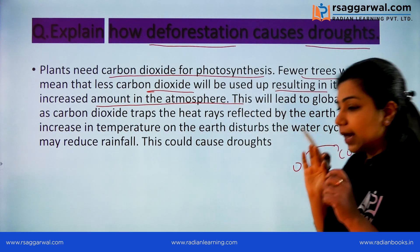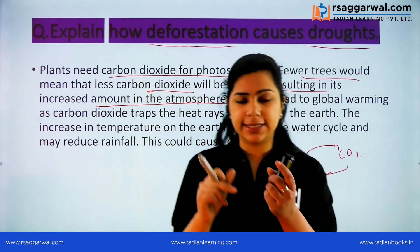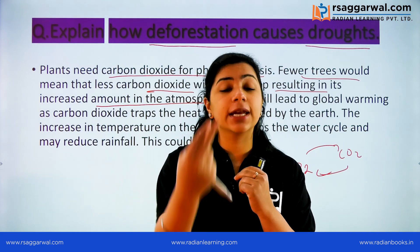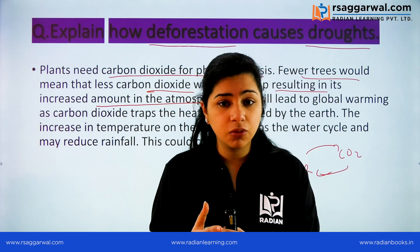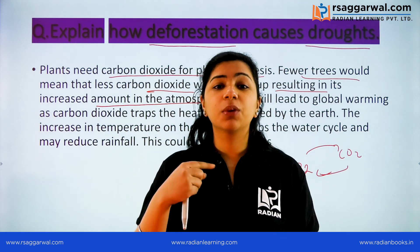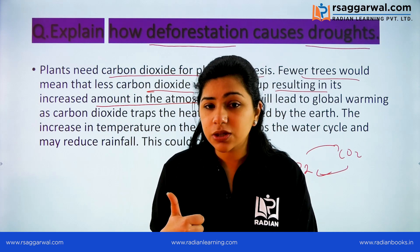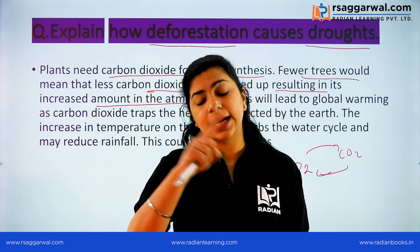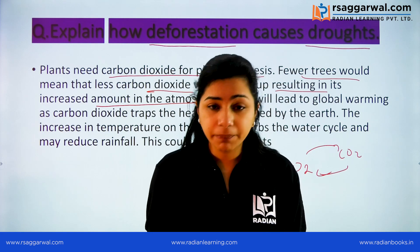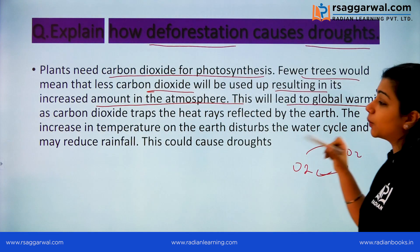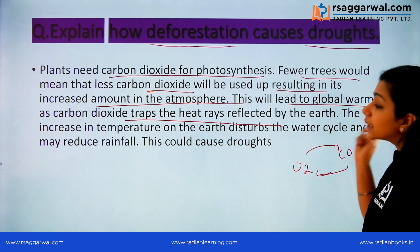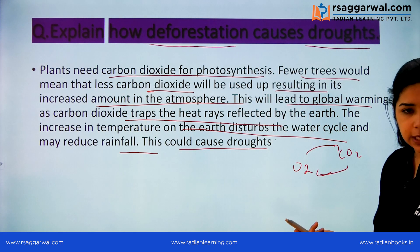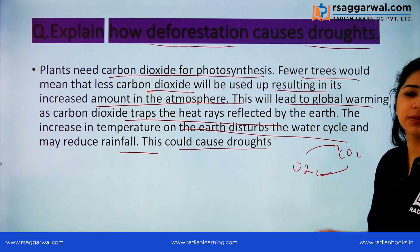To understand the cycle: we breathe in O2 and release CO2. Plants take in CO2 and release O2. If plants are reduced, CO2 will increase in the environment, which increases temperature. The increased temperature disturbs the water cycle and reduces rainfall, and this causes drought. So deforestation disrupts the water cycle and ultimately leads to drought conditions.